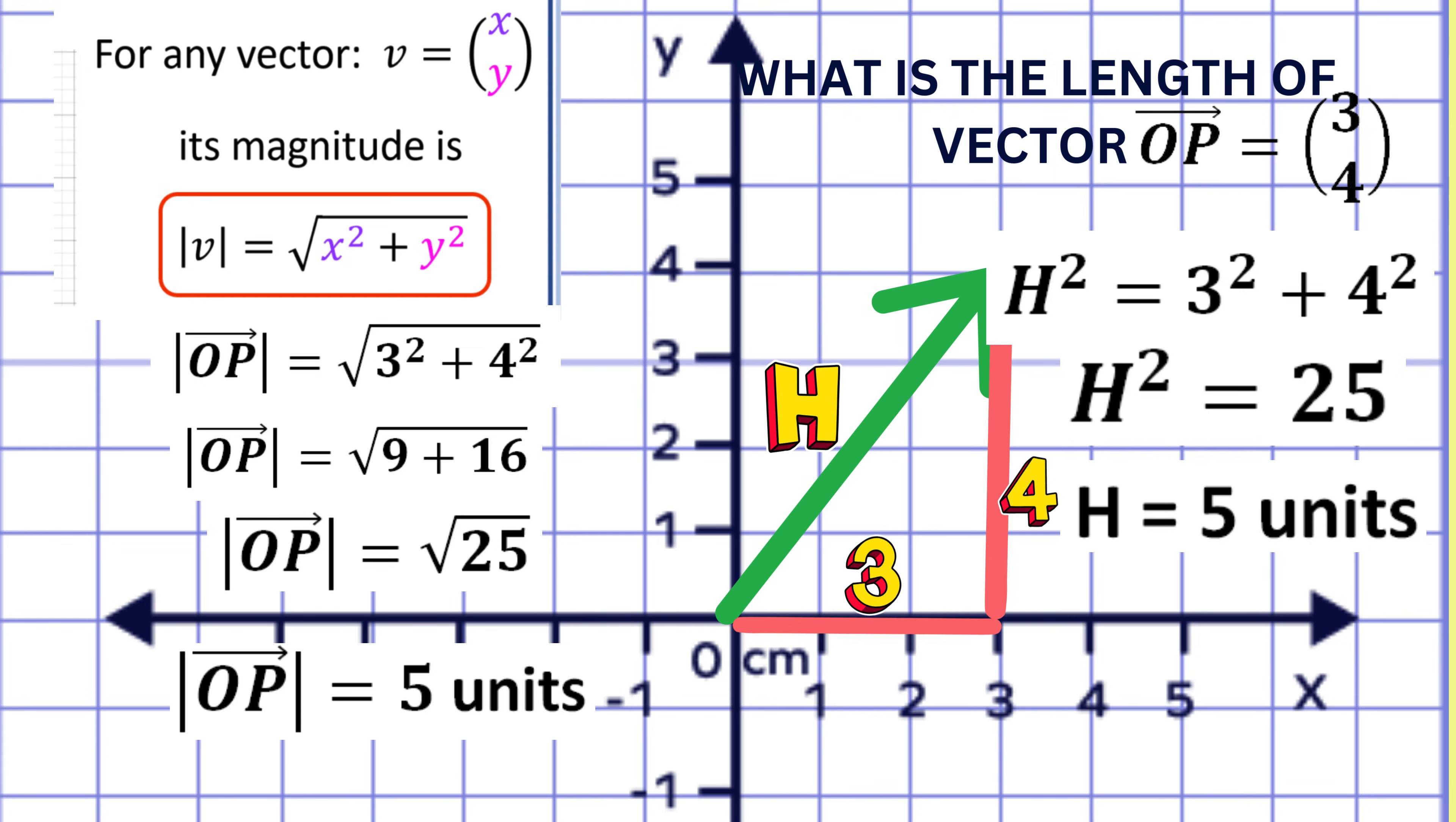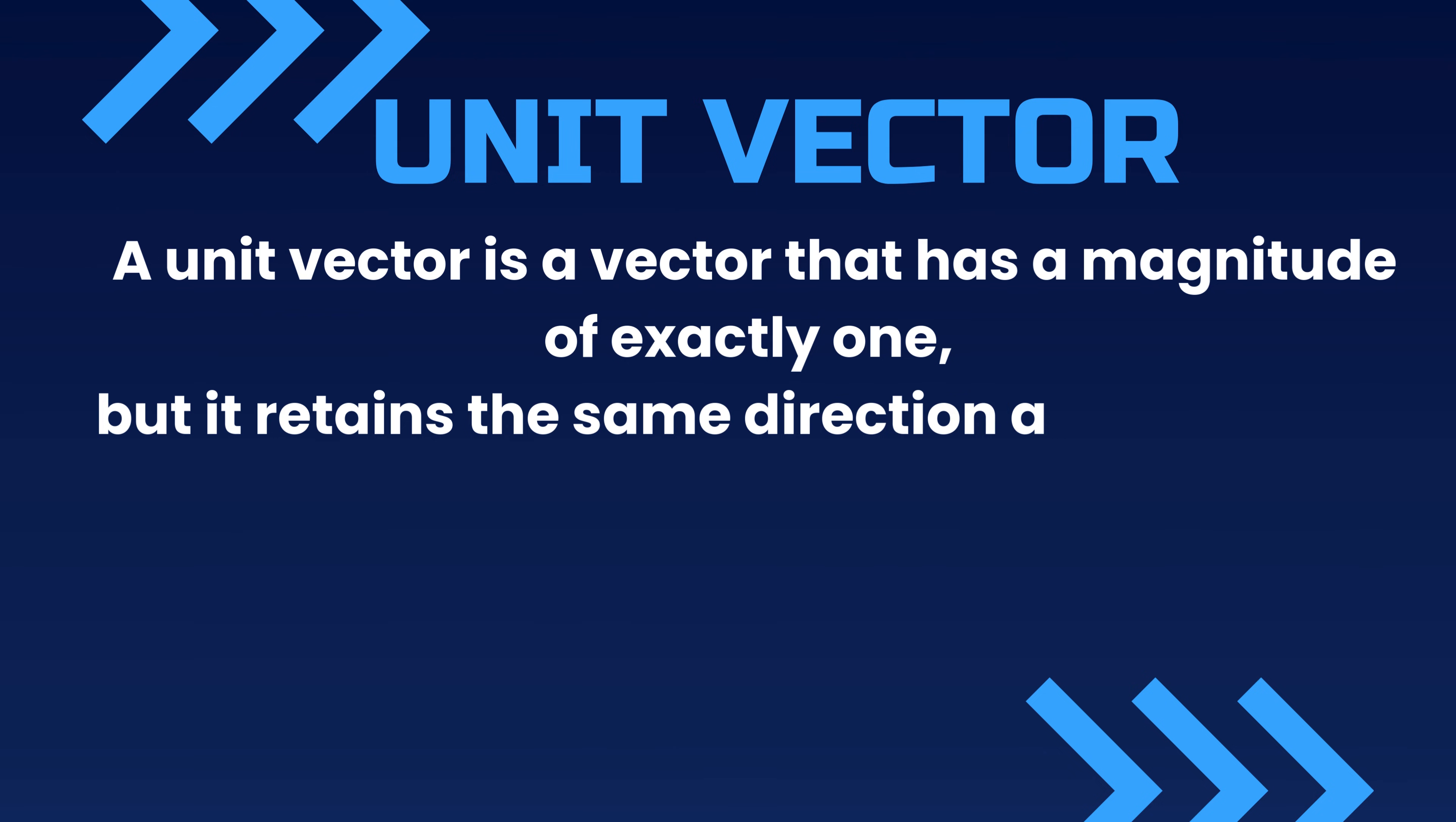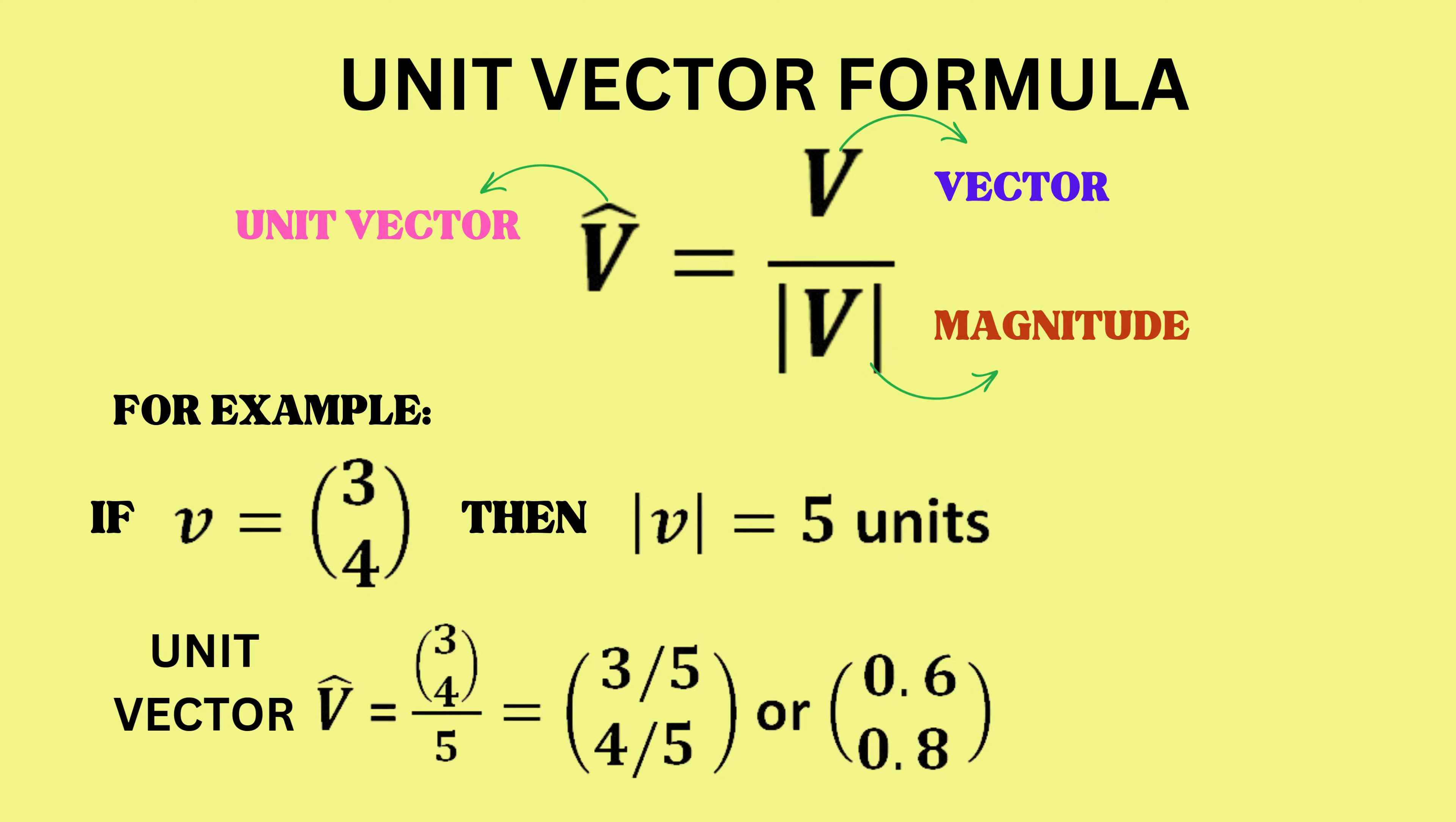A unit vector is a vector that has a magnitude of exactly 1, but it retains the same direction as the original vector. It's often used to standardize directions in physics, engineering, and mathematics. The formula for finding a unit vector is simple. You take the original vector and divide it by its length or magnitude, as you can see on the screen. Note the symbol used to represent a unit vector: a hat. For example, the vector v seen here has a magnitude of 5 units, so its unit vector would be 1 fifth of the original vector.